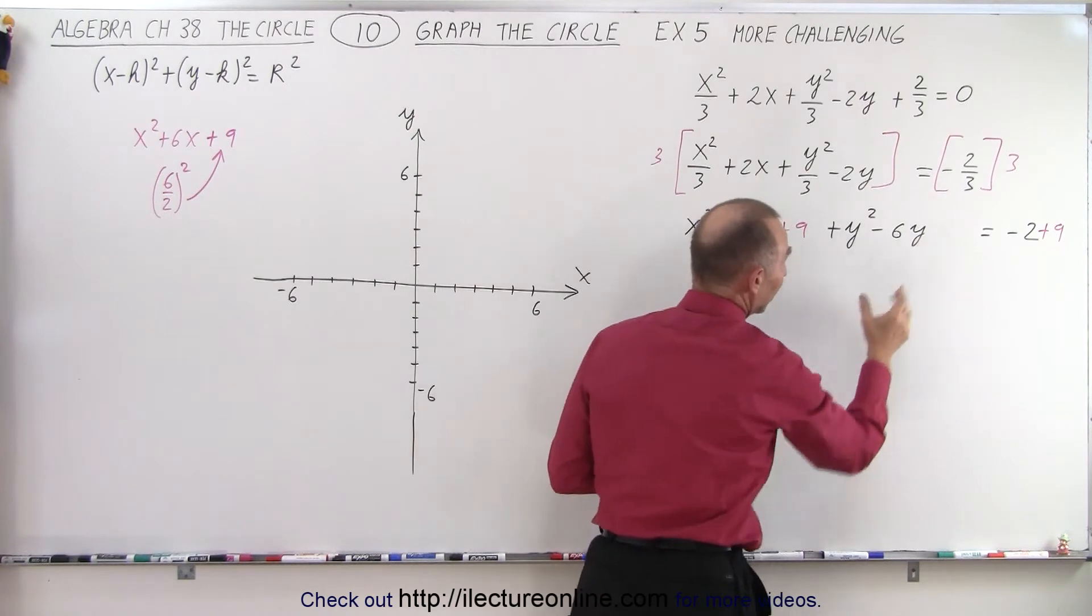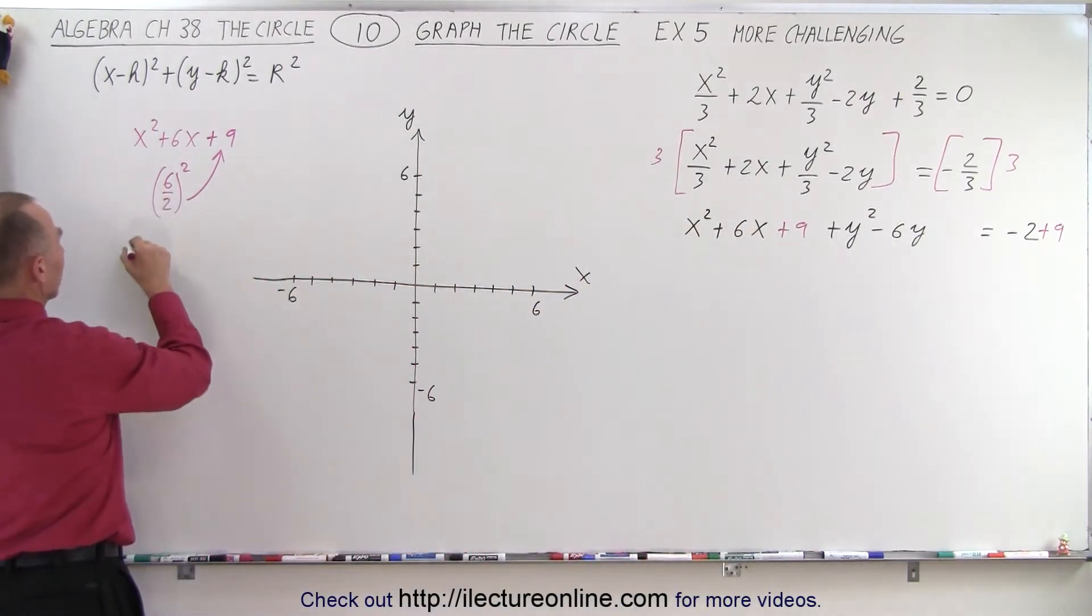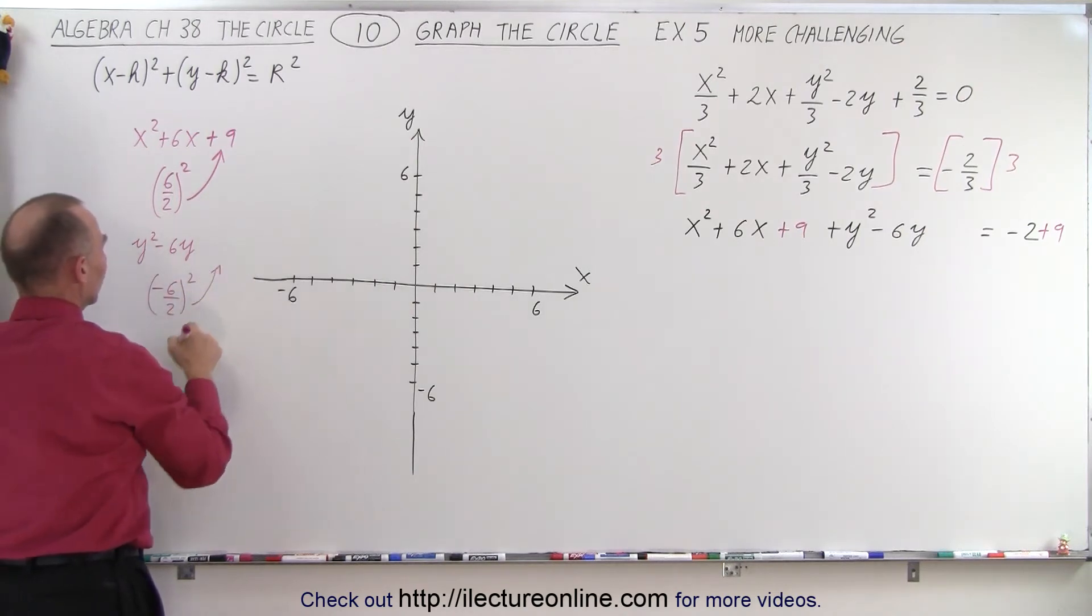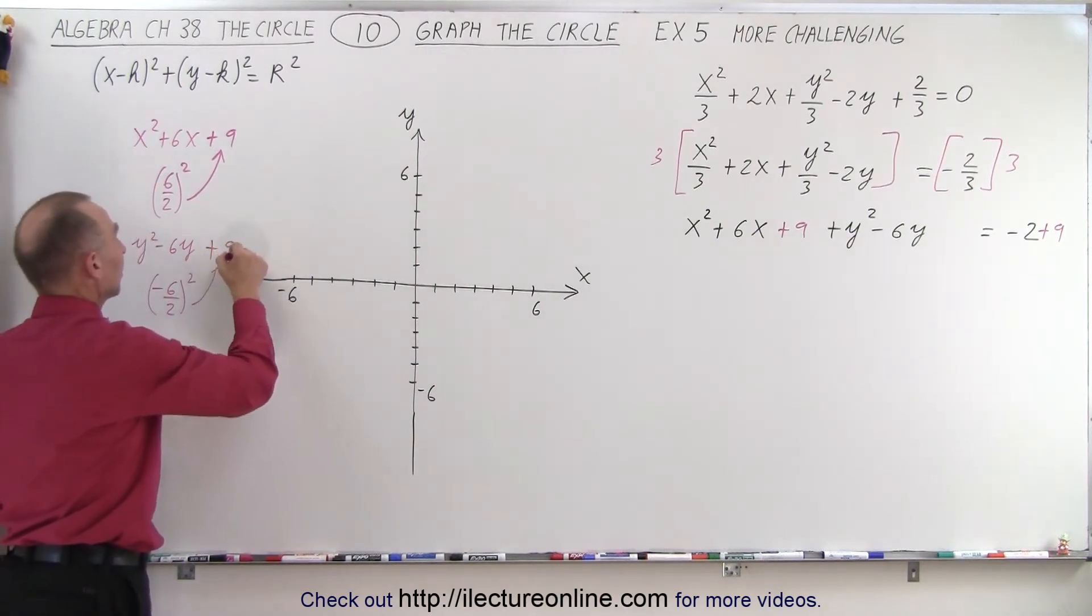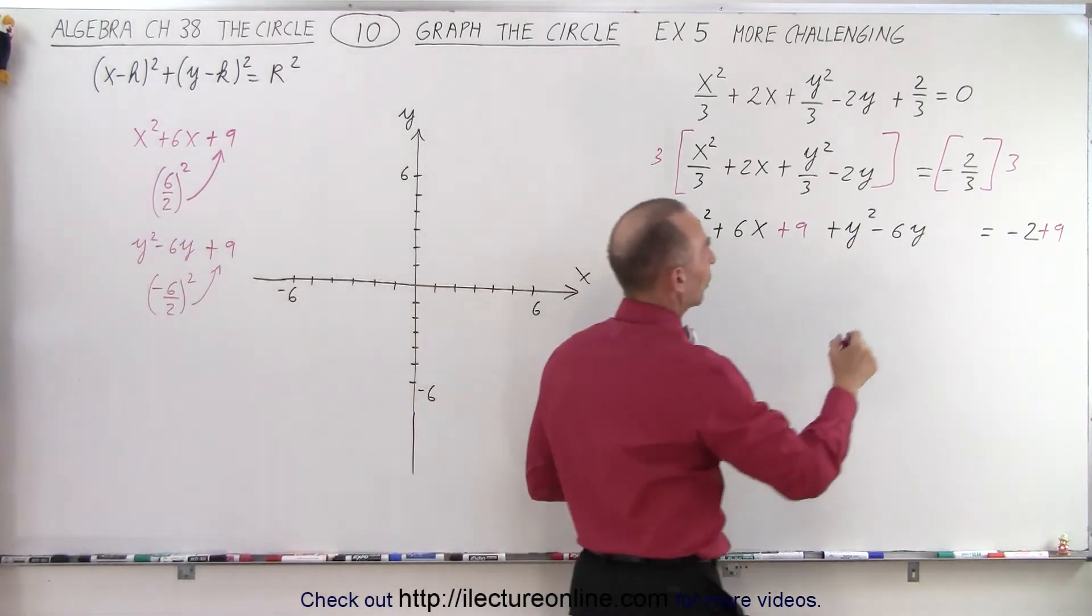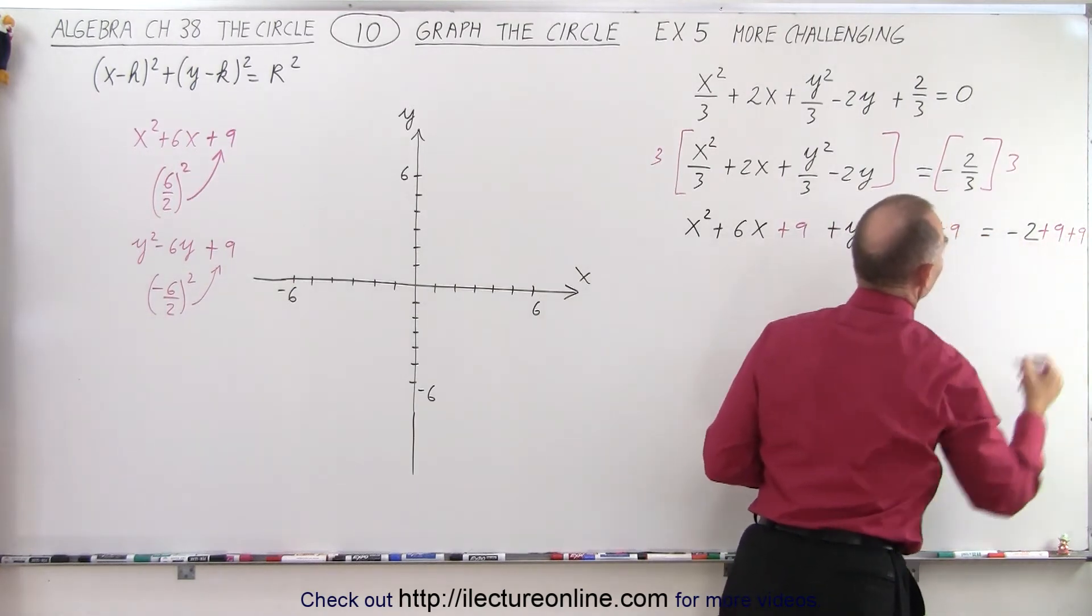And then, of course, we need to do the same over here. We have y squared minus 6y. We take half of this, square that, and add it to both sides. So negative 6 divided by 2 is negative 3. If we square that, we get a positive 9, so we're going to add positive 9 over here. We're going to add positive 9 over there, and of course, we need to add the 9 to the right side as well.